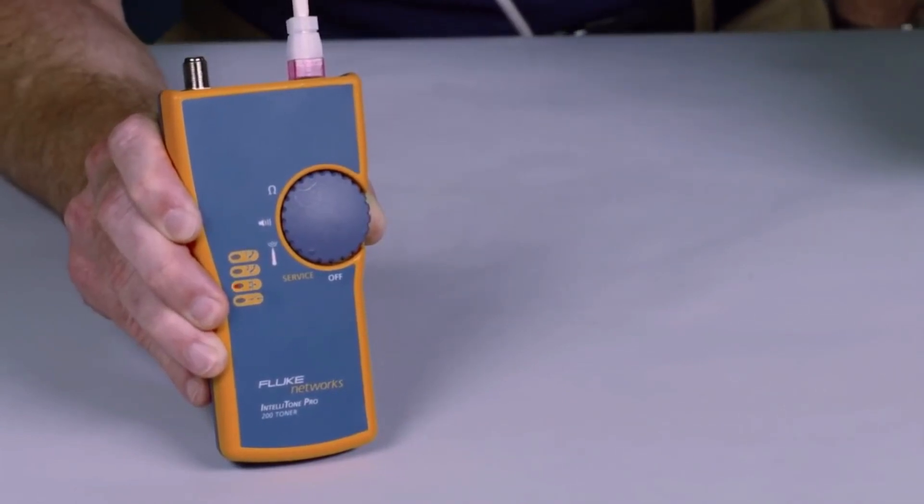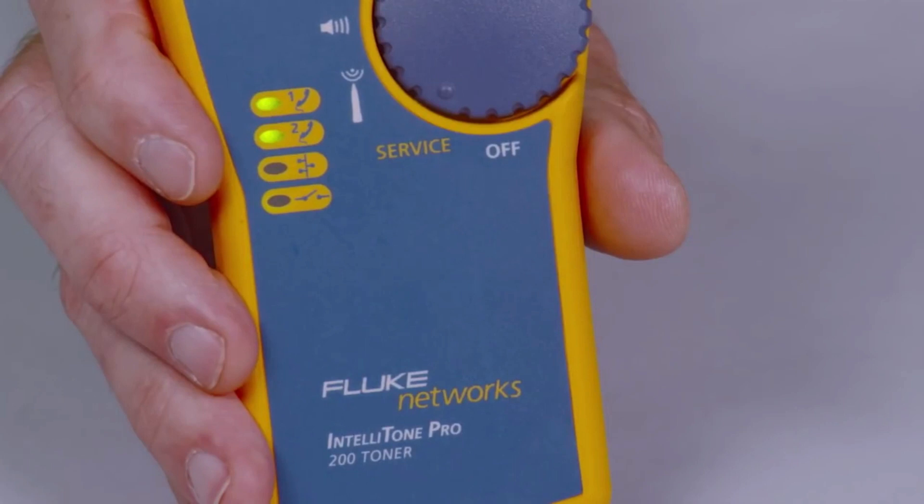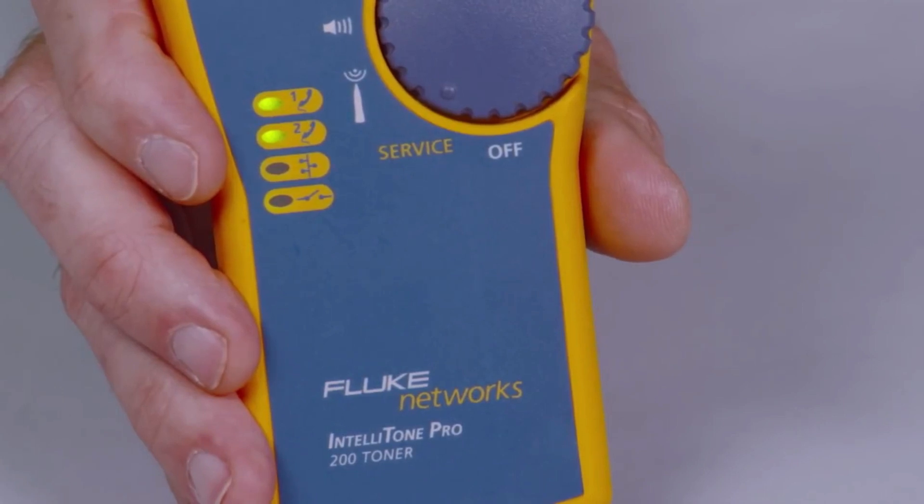Use the 100 to detect line 1 voltage, polarity, and ring. The IntelliTone Pro 200 adds line 2 troubleshooting.